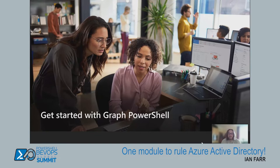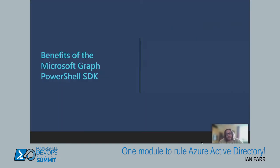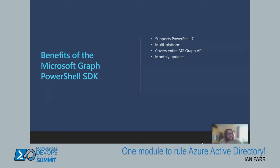Let's look at what you need to do to get started with Graph PowerShell. It's always best to understand why you're using a new tool. Graph PowerShell advantages: supports PowerShell 7, multi-platform, covers the entire MS Graph API, has monthly updates, supports modern authentication specifically passwordless, and comes with a least-privilege model — unlike Azure AD PowerShell where the client has directory privileges by default, here you add permissions via the consent model.